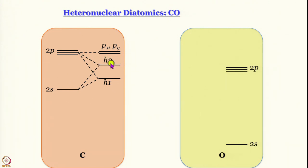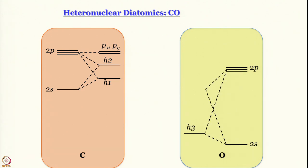The px and py orbitals do not have the right symmetry for sigma bonding, so they remain in a pure unhybridized form on carbon. Similarly for oxygen, hybridization gives H3 and H4, and px and py remain as such. These px and py are available for pi bonding.